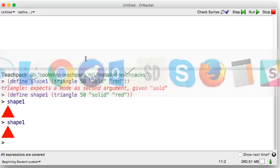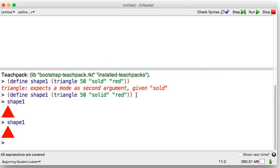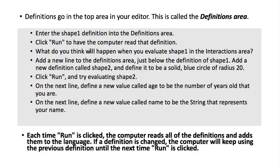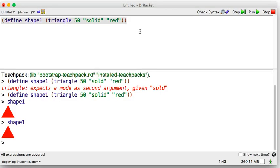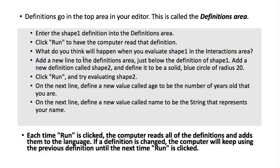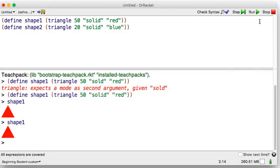We want to do a different example. Let's put that in the definitions area, and then let's add a new one called shape2 that's going to be solid blue 20. Define shape2 as triangle 20 solid blue. Let's click Run.